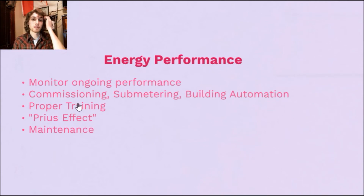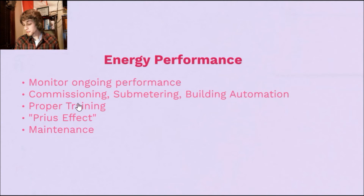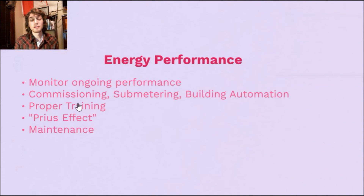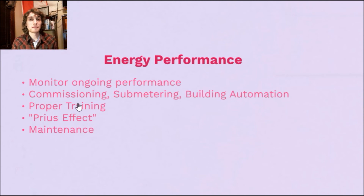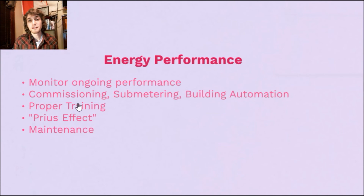This is where our commissioning, submetering, and building automation come in, and we compare that to our baselines. We prepare the owner's project requirements — basically the decisions and project goals that were set — incorporate benchmarking, monitor the progress, and train building employees and managers to operate in this new sustainable environment for ongoing progress and maintenance. We also have something called the Prius effect, where people perform better when they see the positive impact they're having — when they see their savings in costs and reduced environmental impact, they're encouraged to do more. Finally, we want to keep up on yearly maintenance and monitor our infrastructure to avoid issues like thermal leakage.